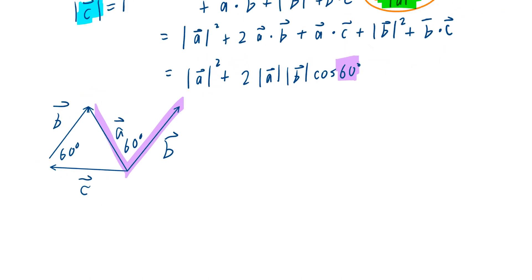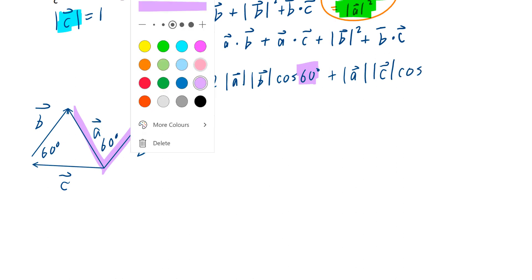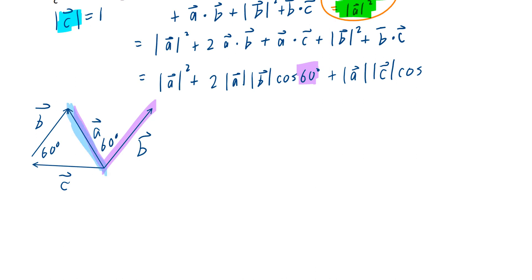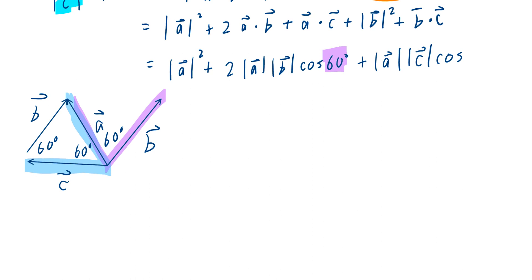Likewise, for a dot c: by definition that's the magnitude of a times the magnitude of c times cosine of the angle between a and c. Looking at the diagram, a is here and c is right there — they're connected tail to tail, and from the equilateral triangle we know this angle is 60 degrees. So we write down cosine of 60 degrees.